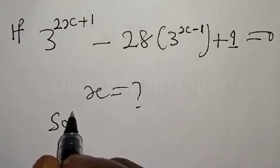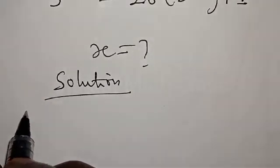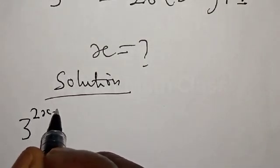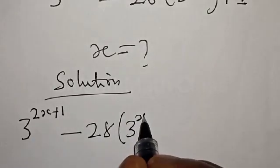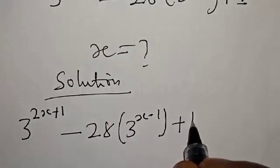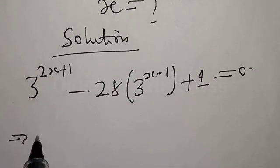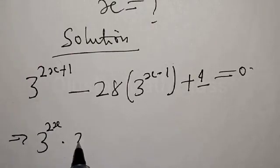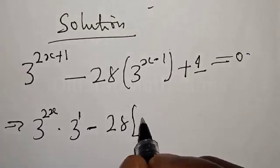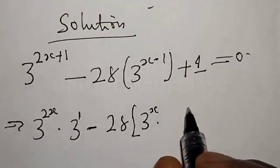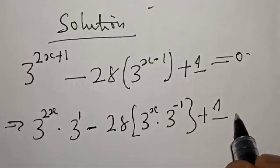Solution. We have 3 raised to power 2x plus 1, minus 28 into 3 raised to power x minus 1, plus 1 is equal to 0. This implies that we have 3 raised to power 2x multiplied by 3 raised to power 1, minus 28 into 3 raised to power x multiplied by 3 raised to power minus 1, plus 1 is equal to 0.